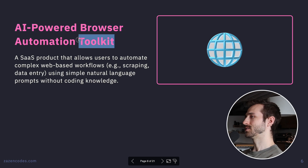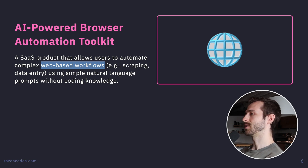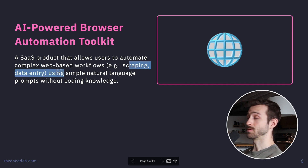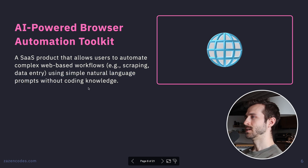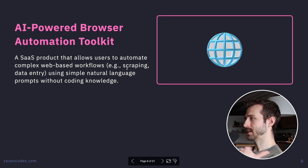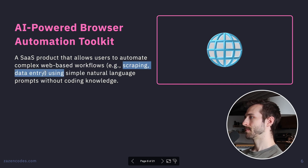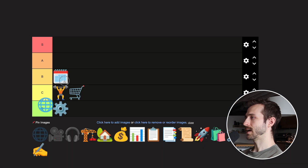AI Powered Browser Automation Toolkit — a SaaS product that lets users automate complex web-based workflows using natural language prompts, including scraping and data entry. This reminds me of TestRigger, an automated test suite for web applications doing really well out of Toronto. I've thought of a similar idea for BI tools — imagine an executive gets in and the AI controls their mouse and clicks through the report. I love this type of idea. I'm going A tier.